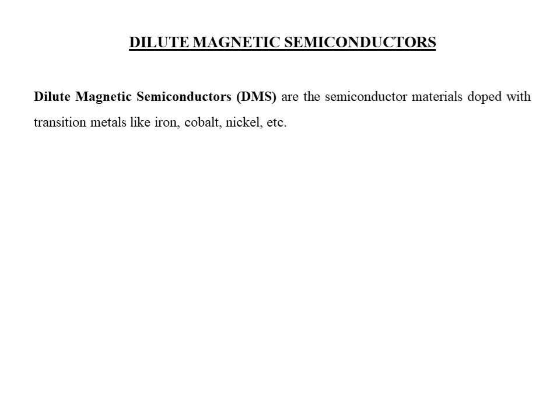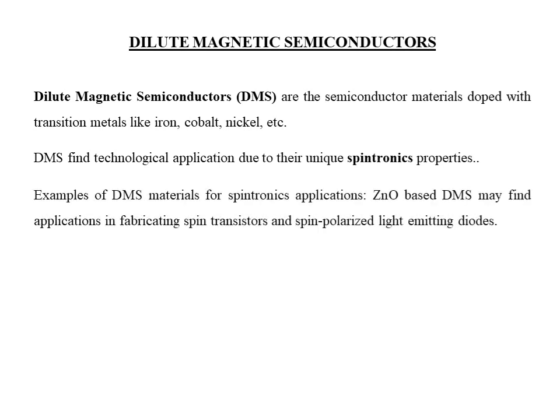These dilute magnetic semiconductors find technological application due to their unique spintronic properties. We have not yet discussed spintronics, but we will get to it shortly. Some examples of DMS materials in spintronic applications include zinc-based DMS, which are useful in fabricating spin transistors and spin-polarized light-emitting diodes. Here are some examples of dilute magnetic semiconductors.